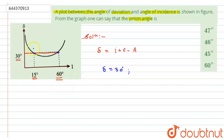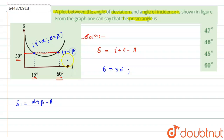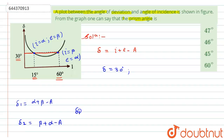The angle of deviation is common for both angles of incidence. If we suppose angle of incidence equals alpha, then angle of emergence equals beta, giving delta-1 = alpha + beta - A. Similarly, if angle of incidence is beta and angle of emergence is alpha, then delta-2 = beta + alpha - A. Therefore delta-1 equals delta-2, both equal to 30 degrees.